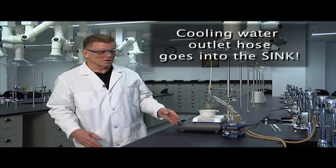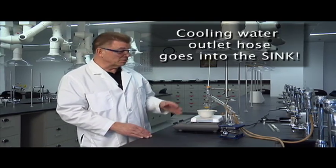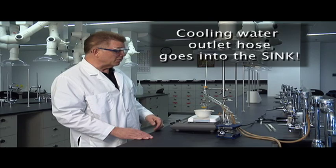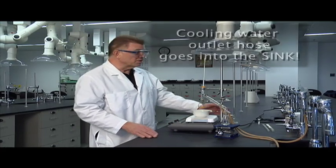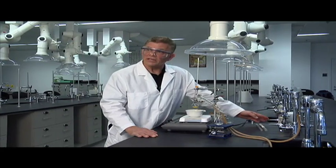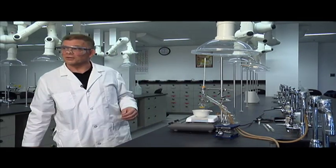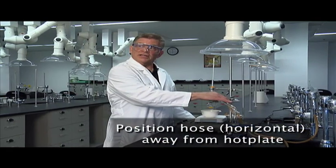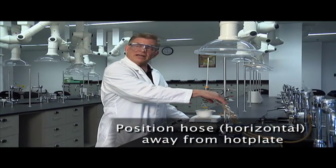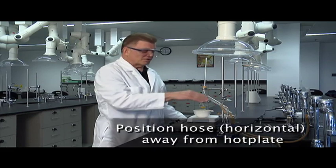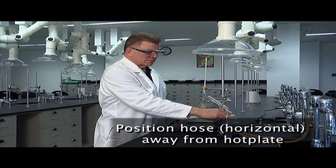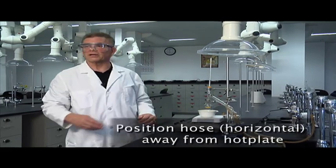When you set up the cooling water from the tap, the outlet goes into the sink. And that seems obvious. But we had one fellow one year who decided to put the outlet of the condenser into the vacuum. Don't do that. It goes into the sink. I recommend that you turn your condenser so the hose connections are a little horizontal. And that will keep the tube off of the hot plate.